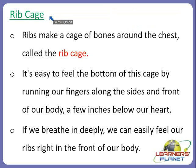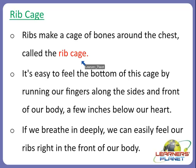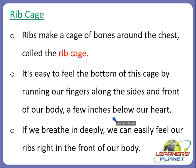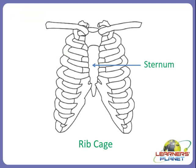Ribs make up a cage of bones around the chest called the rib cage. It is easy to feel the bottom of this cage by running our fingers along the sides and front of our body, a few inches below our heart. If we breathe in deeply, we can easily feel our ribs right at the front of our body.